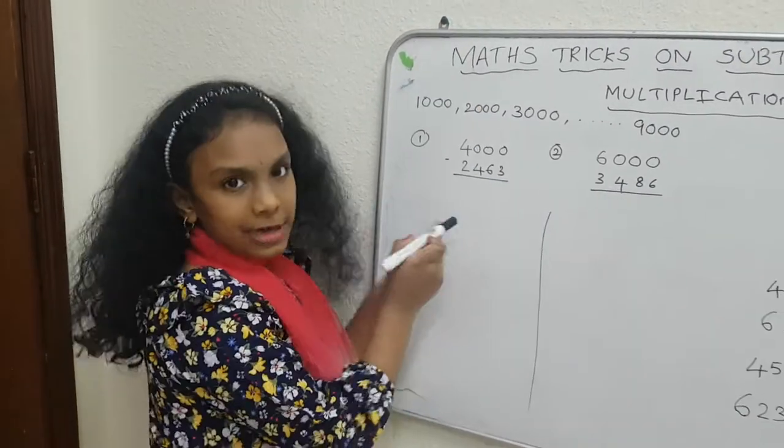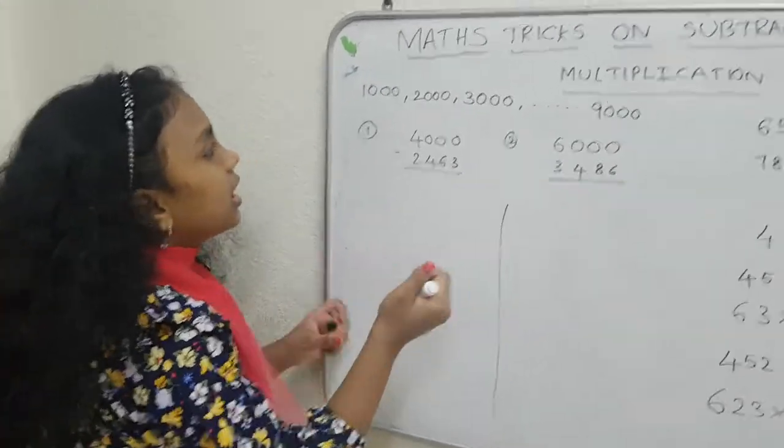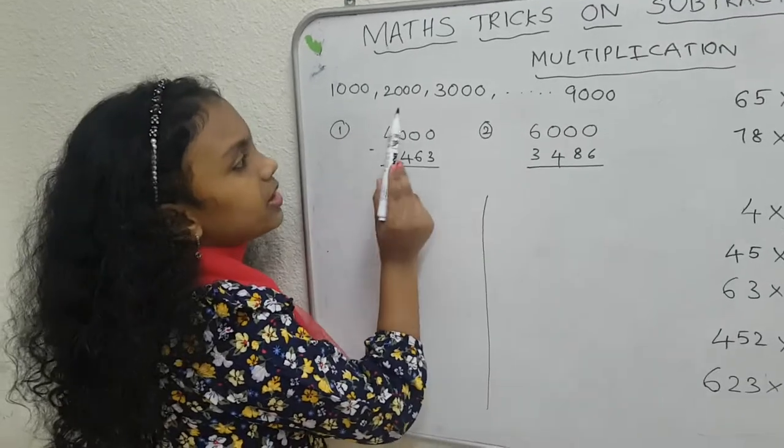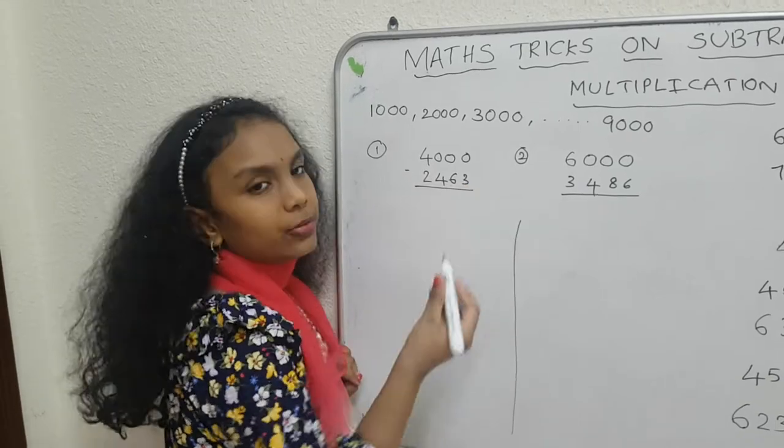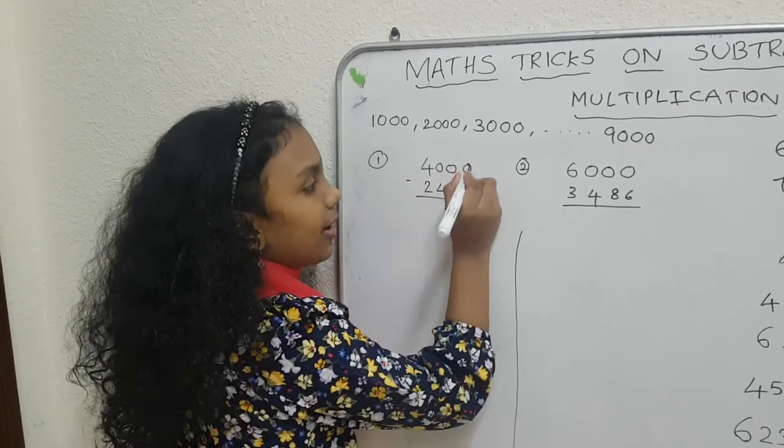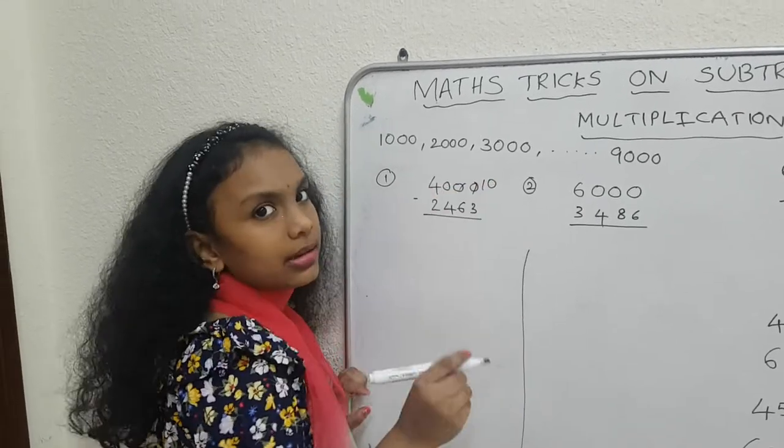We have a subtraction trick from 1000, 2000, 3000 and so on till 9000. Normally we have to take a borrow, right? Like we have to do 10, 10, 9, okay? Like that.